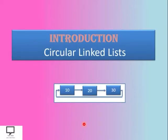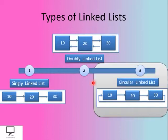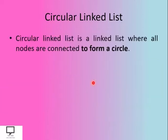Now let's start with the introduction to circular linked list. There are different types of linked lists: SLL (singly linked list), DLL (doubly linked list), and CLL (circular linked list). I have already covered the topics and series related to singly linked list and doubly linked list on my channel. Now let's discuss circular linked list. The circular linked list is a linked list where all nodes are connected to form a circle.